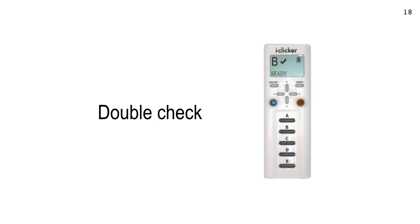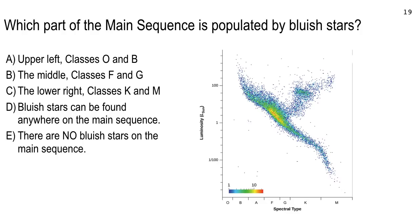Let's do some double checking, just to get your brain cooking. Your brain is your number one weapon. Clicker question: where are bluish stars on the main sequence HR diagram? Upper left, middle, lower right, or are there no blue stars on the main sequence?